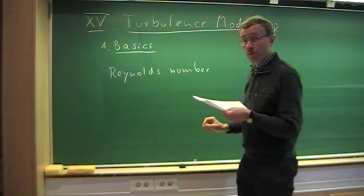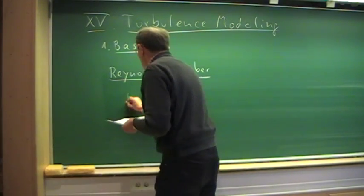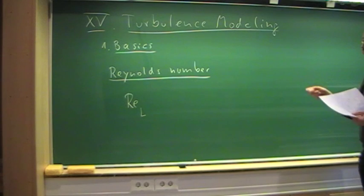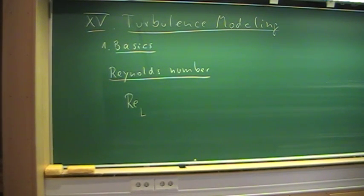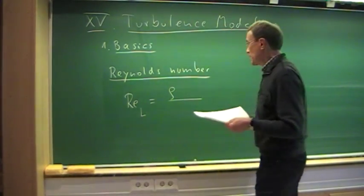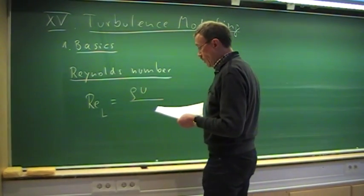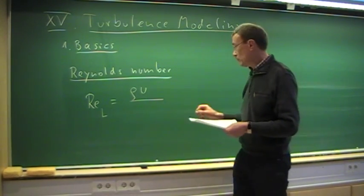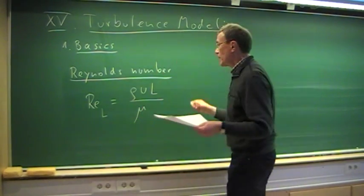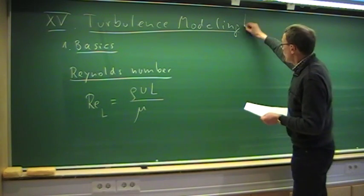The important parameter is the Reynolds number, found by Osborne Reynolds in his famous dye experiment. If we have a characteristic length scale L — for example the diameter of the golf ball — and with constant density, a reference velocity such as the uniform incoming flow velocity, then the Reynolds number is Re = ρUL/μ. If that is high enough, the flow transitions from laminar to turbulent flow, which is a very complex process in itself.